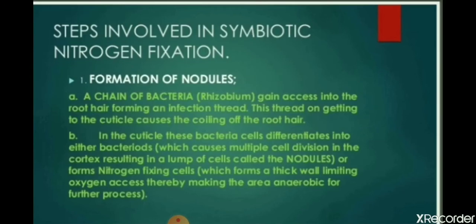Now we see the steps involved in symbiotic nitrogen fixation. It starts with the formation of nodules. A chain of bacteria gain access into the root hair, forming an infection thread. This thread on getting to the cuticle causes the coiling of the root hair. In this cuticle, the bacterial cell differentiates into either bacteroids or forms nitrogen-fixing cells.